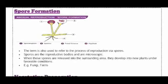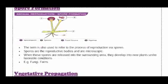Next is spore formation. The term spore formation refers to the process of reproduction via spores. Spores are microscopic bodies found in fungi. They are packet-type structures, and when they are dispersed, they fall into surrounding areas and germinate.